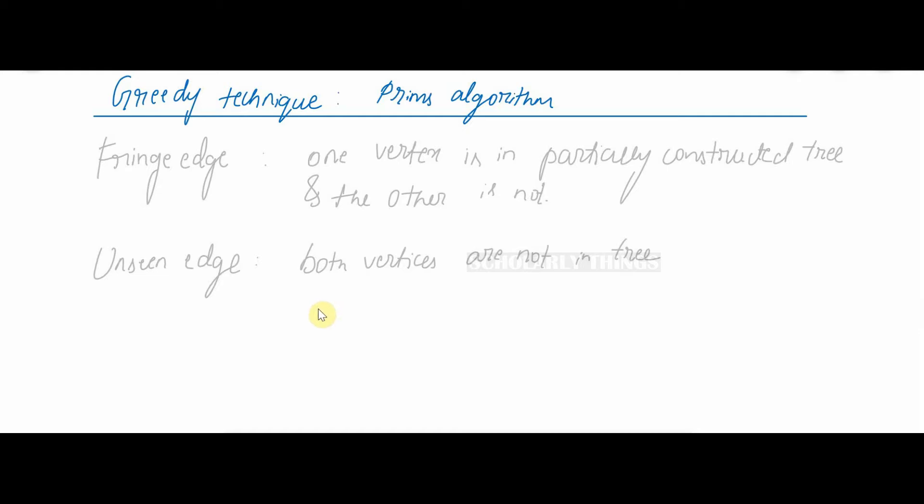Coming to the algorithm, we need to know these two definitions. Fringe edge: one vertex is in partially constructed tree and the other is not. Unseen edge: an edge with both vertices not in the tree.